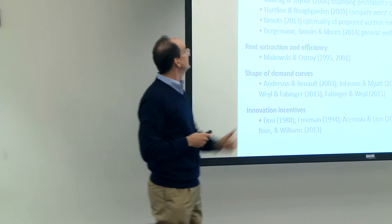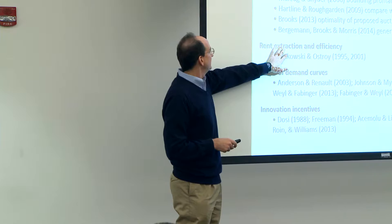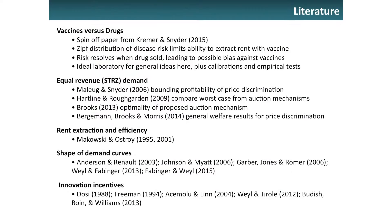There's a bunch of papers that use this collection of equal-revenue STARS demands to find results — thinking about rent extraction and efficiency, general equilibrium papers building on that, papers about the shape of demand curves and different monopolist or oligopolist policies, how lucrative markets are, and also papers on incentives to enter markets and innovation incentives.